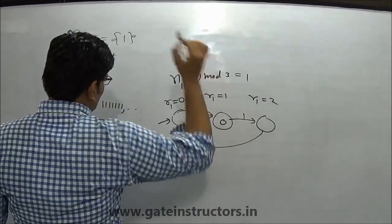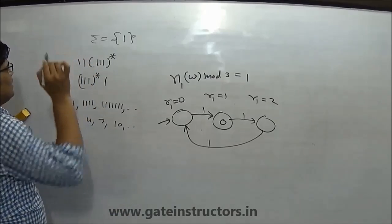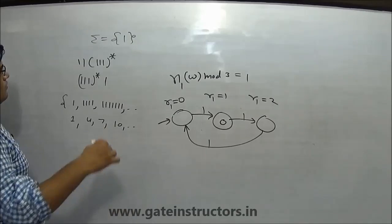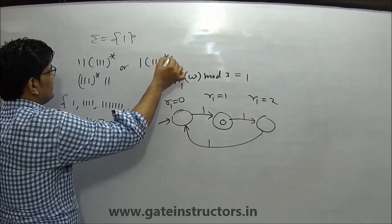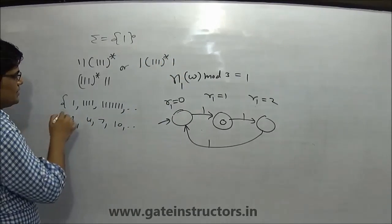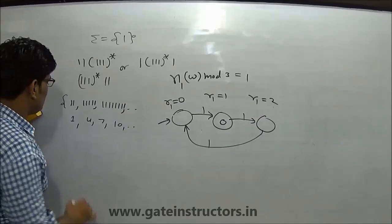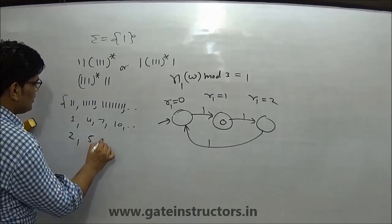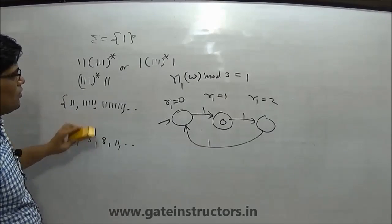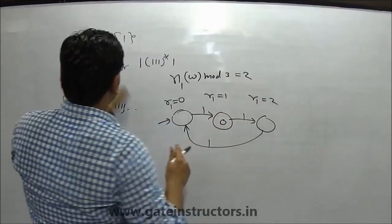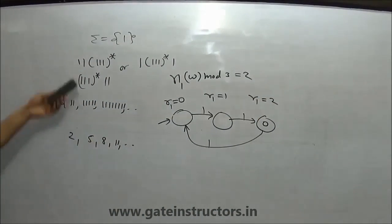So in this case, for this language, you will finalize this state — we will finalize this state. What will be your DFA? One, one, one, one, one, one — or you can write it in this way. If you count the number of 1s and divide, then you will get the remainder. For this, the final state will be the final state. This will be your DFA for this language.